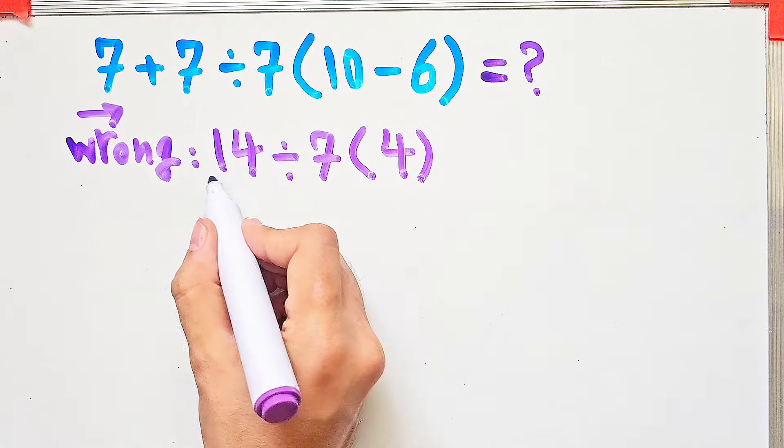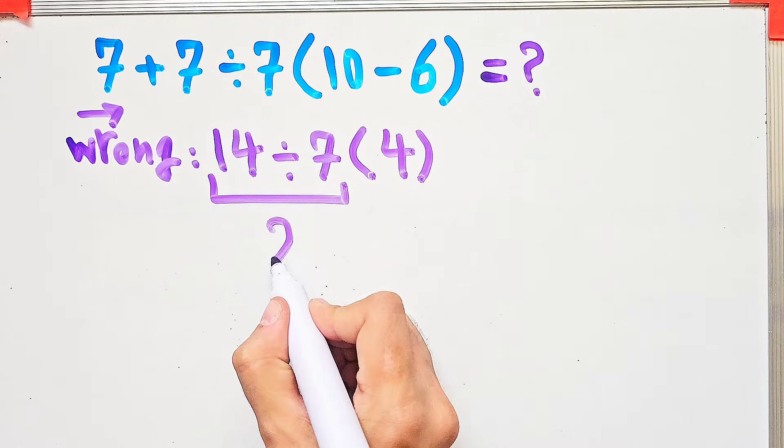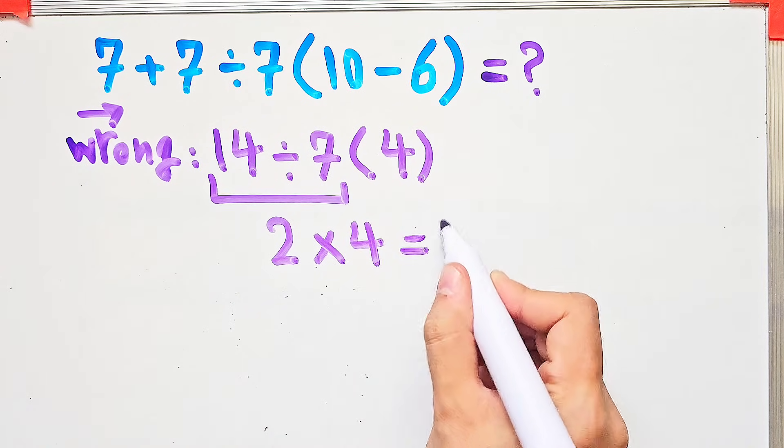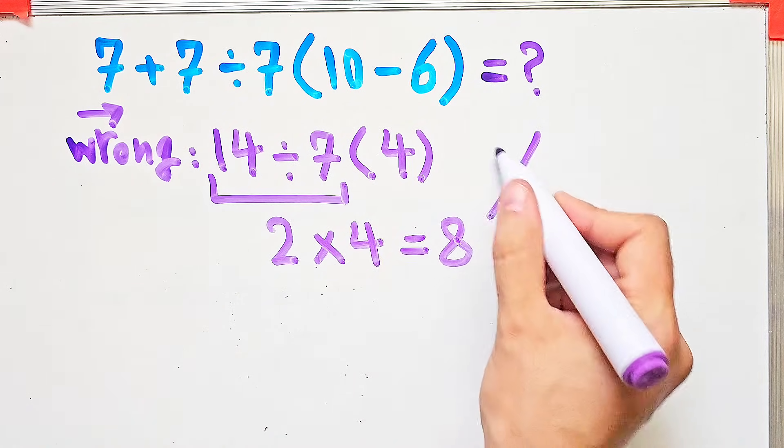After that, they do this division 14 divided by 7 equals 2 and 2 times 4 equals 8. But this answer is wrong.